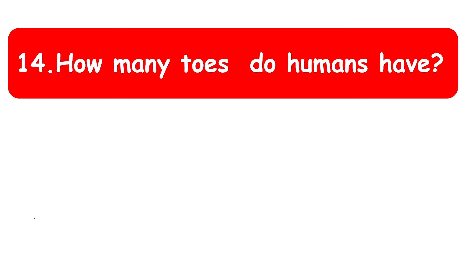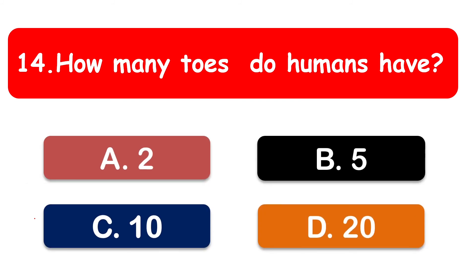How many toes do we have? Toes are the fingers of our legs. The options are 2, 5, 10, and 20. The correct answer is ten toes.